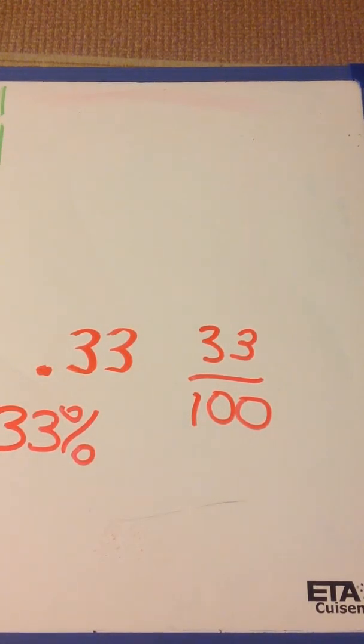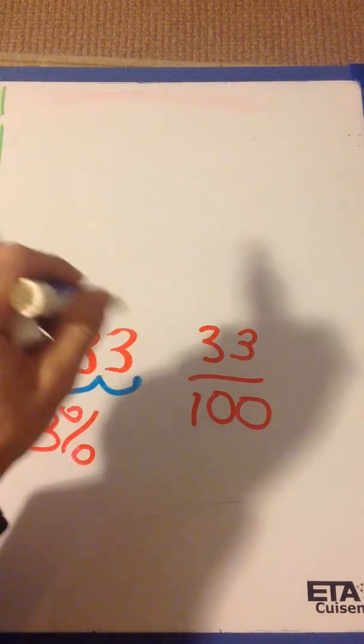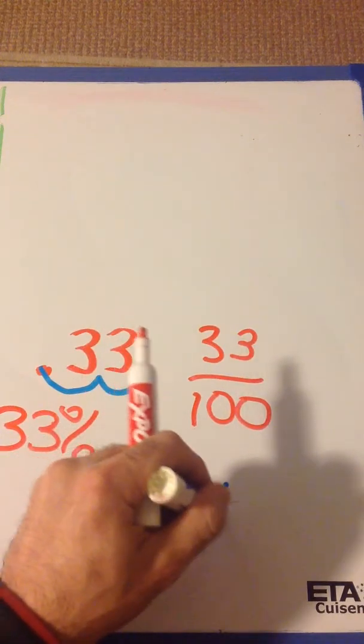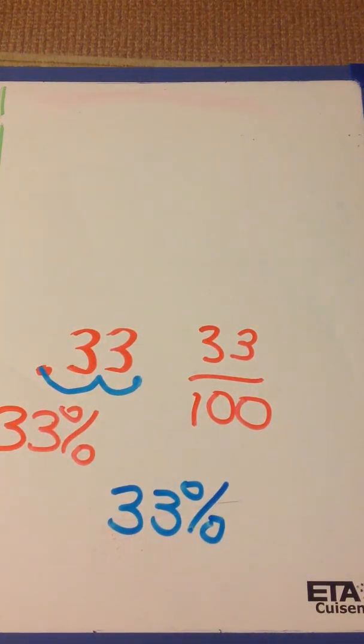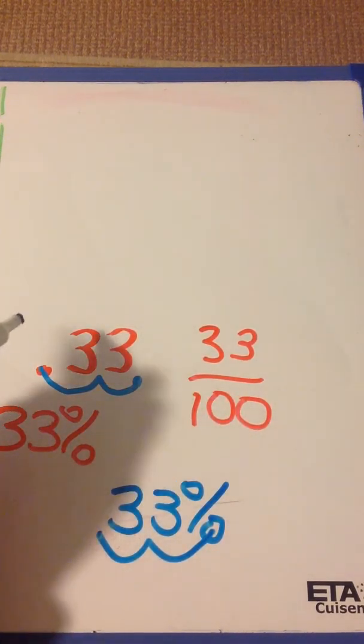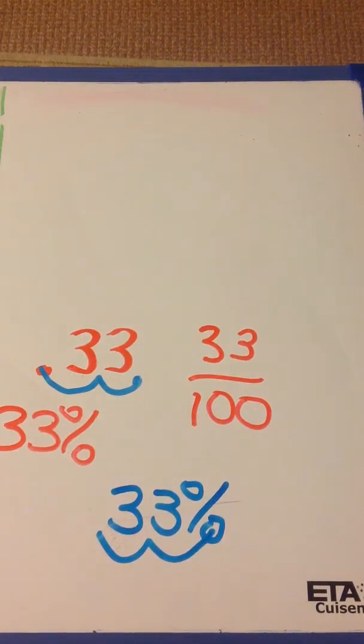Or you could have also moved the decimal the other way, back twice. Once you move it back twice, you get 33%. So again, if you have the percent sign, you move it twice to get the decimal. And if you don't have the percent sign, you just have the decimal, move it twice the other way to get the percent.